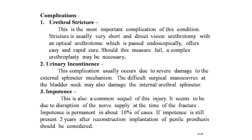Complications of ruptures of the urethra include urethral stricture, urinary incontinence, and impotence. Urethral stricture is the most important complication. The stricture is usually very short, and direct vision urethrotomy with an optical urethrotome passed endoscopically offers easy and rapid cure. Should this measure fail, complex urethroplasty may be necessary.